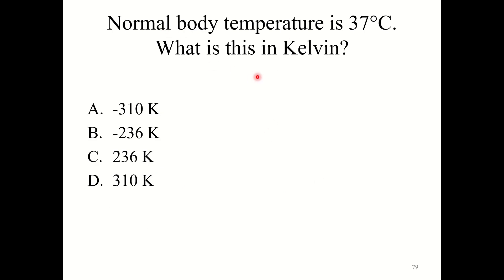Here is a quick knowledge check question for you. Normal body temperature is 37 degrees Celsius. What is this in Kelvin? Alright, the correct answer here is D, 310 Kelvin. So you would take 37 degrees Celsius and you would add 273.15 and you get 310 Kelvin or 310.15 Kelvin.